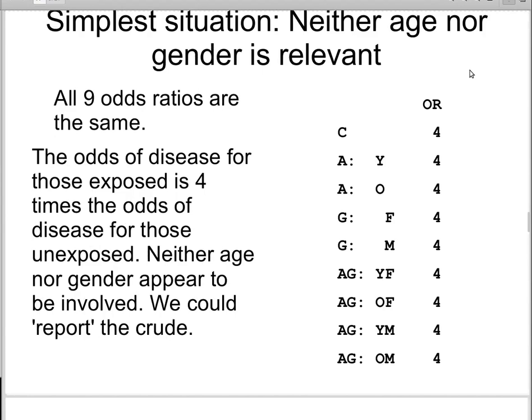Let's look at the very simplest of circumstances. It could be that although we decided to study age and gender and their impact on the disease-exposure relationship, it didn't matter — all nine of the odds ratios were the same. The four age-gender-specific odds ratios are all four, as are the age-specific, gender-specific, and crude odds ratios. Implementing Occam's razor: keep it simple. Report that the odds ratio is four, and carry on.